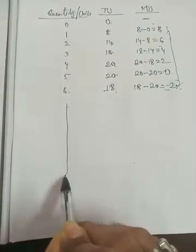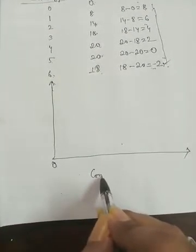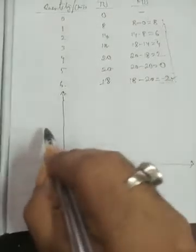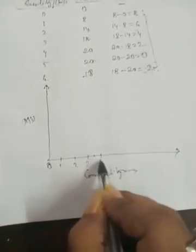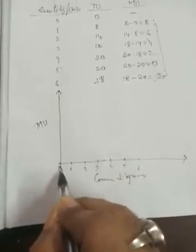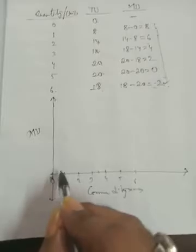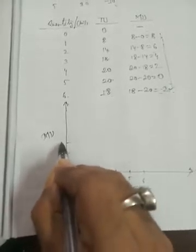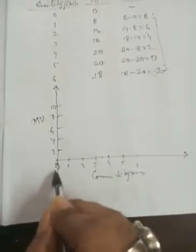If we convert this into a diagram, we take goods or commodity on the horizontal axis and marginal utility on the vertical axis. We mark 0, 1, 2, 3, 4, 5, and 6 on the horizontal axis, including the negative side since marginal utility can be negative. On the vertical axis we mark 2, 4, 6, 8, 10, and minus 2.